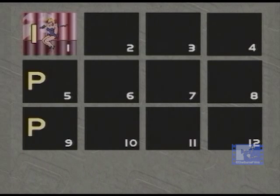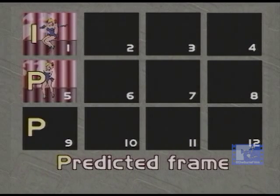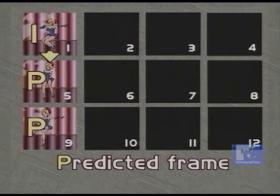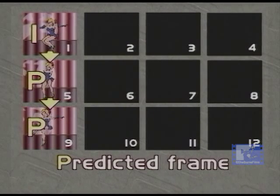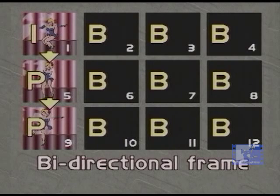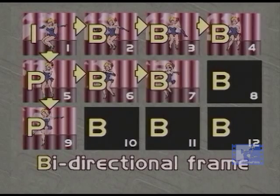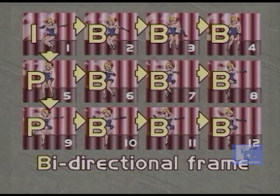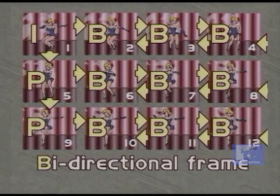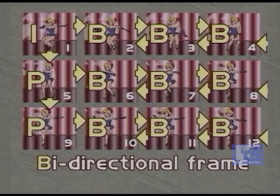P-frames are predicted frames with reference to information presented in the nearest preceding I- or P-frame. Each P-frame also serves as a reference for future P-frames. B-frames are bi-directional frames that are coded using motion compensated prediction from the nearest preceding I- or P-frame and the nearest following I- or P-frame. The sum of the bits assigned to the I-, P-, and B-frames cannot exceed the allocated transmission speed in any given second.